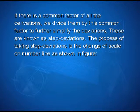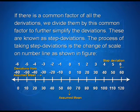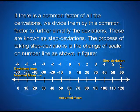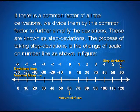In the figure, the values range from 0 to 120. Before deviations, assuming 60 as the mean, the corresponding values after deviation are 10, 20, 30, 40, 50 on one side and −10, −20, −30, −40, −50, −60 on the other. After step deviation, since 10 is a common factor, we divide by 10 and the values change to −6, −5, −4, −3, −2, −1, 0, 1, 2, 3, 4, 5, and 6.